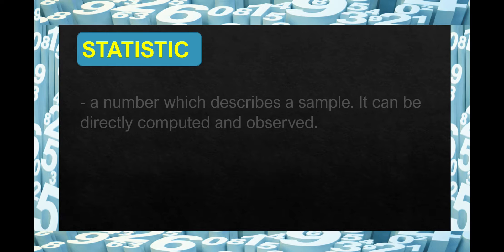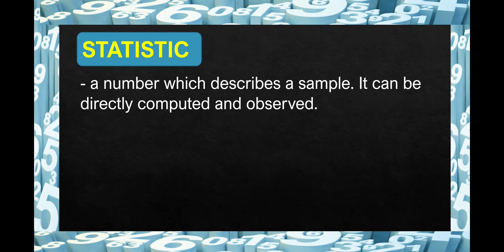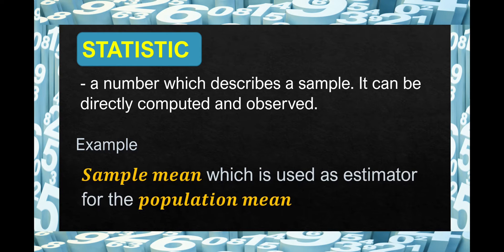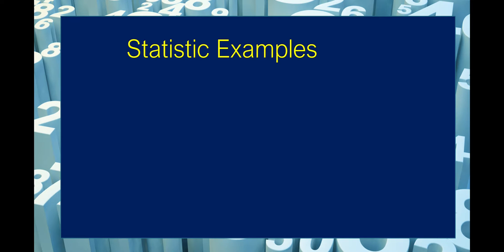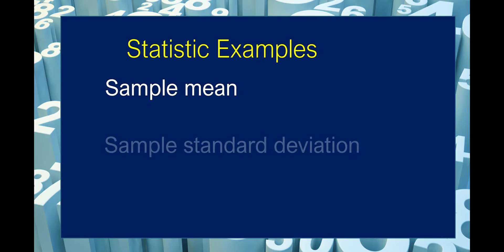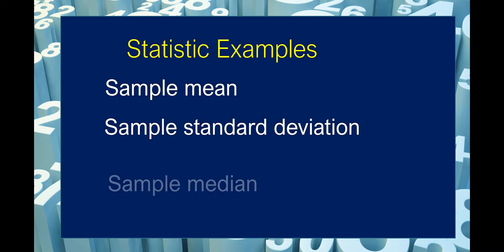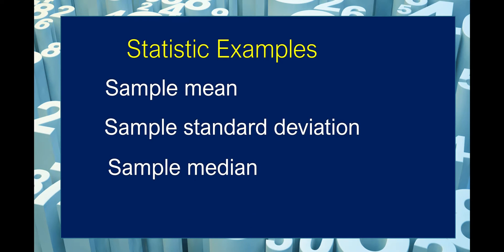We define statistics as a number which describes a sample. It can be directly computed and observed. An example of this is a sample mean, which is used as an estimator for the population mean. Other examples of statistics are the sample mean, sample standard deviation, and sample median.